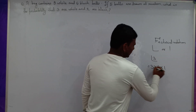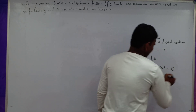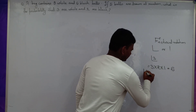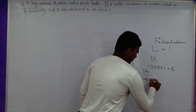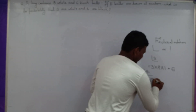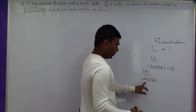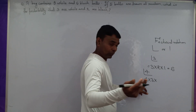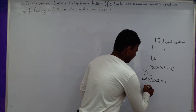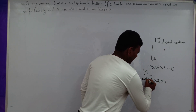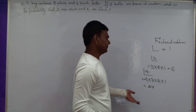For example, factorial 4: take 4, subtract 1 to get 3, subtract again to get 2, and finally 1. So 4 × 3 × 2 × 1 = 24. That is 24. This is the factorial.